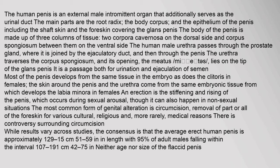The body of the penis is made up of three columns of tissue: two corpora cavernosa on the dorsal side and corpus spongiosum between them on the ventral side. The human male urethra passes through the prostate gland, where it is joined by the ejaculatory duct, and then through the penis. The urethra traverses the corpus spongiosum, and its opening, the meatus, lies on the tip of the glans penis.